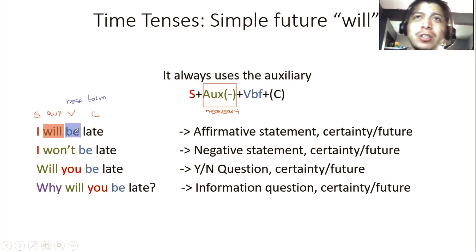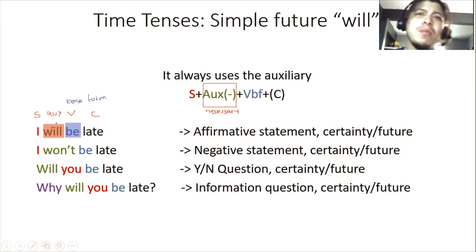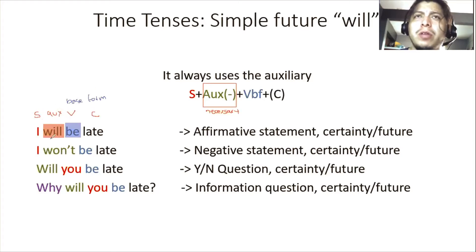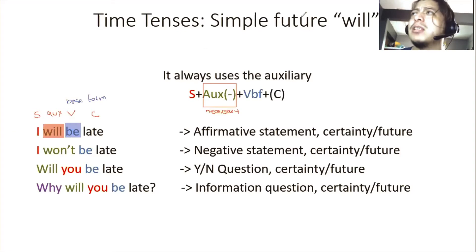'I will be,' 'you will be,' 'she will be,' 'they will be,' 'we will be' — it is always 'will' and 'be' in the base form. Remember, the verb 'to be' is a normal verb. In the simple present and in the simple past, the verb 'to be' is a little different — it never uses the auxiliary. But in the future, the auxiliary is always 'will,' and the verb 'to be' is just another verb: 'I will be,' 'I will run,' 'I will go,' 'I will try,' 'I will eat.' It is always in the base form. It's just another simple normal verb — you don't really have to do anything special with it.